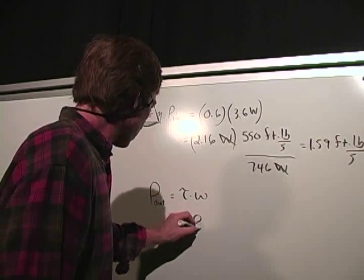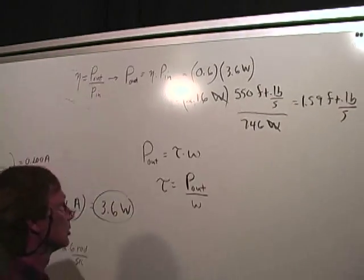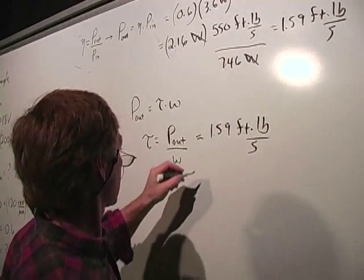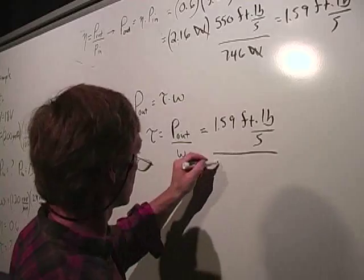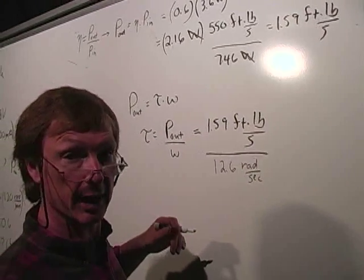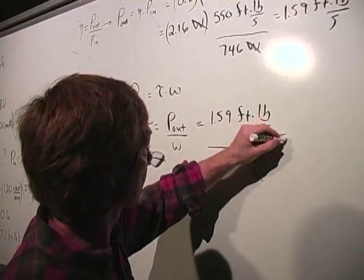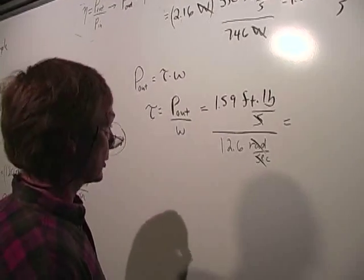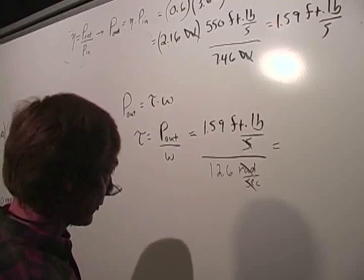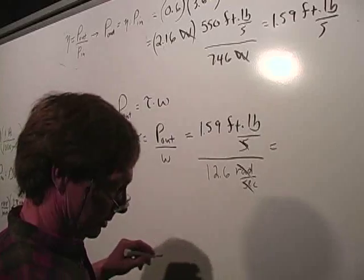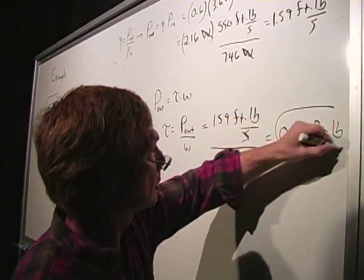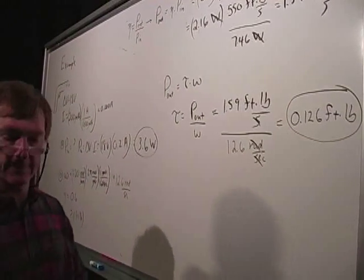The torque is equal to the output power over the angular velocity, which is 1.59 foot-pounds per second, divided by the angular velocity, which is 12.6 radians per second. And we can get rid of the radians. The seconds will cancel, and so we're going to have foot-pounds. That gives us 1.59 divided by 12.6. I get 0.126 foot-pounds of torque on this drill.